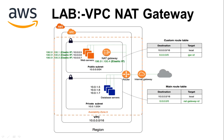In this session, we will see a lab of VPC NAT gateway. We have seen a VPC demo previously in which we created a public subnet. After that, we created it with an EC2 instance. But here, let's look at the scenario.